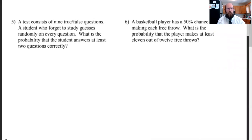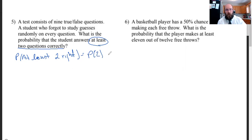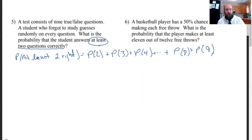A test consists of nine true-false questions. A student who forgot to study guesses randomly on every question. What is the probability that the student gets at least two questions correct? This is where things can become tricky. Getting at least two correct equals the probability of getting two right, plus the probability of getting three, plus four — continuing the pattern all the way through eight and nine correct. At least two means they could have also gotten nine correct — that's a part a lot of people have issues with.